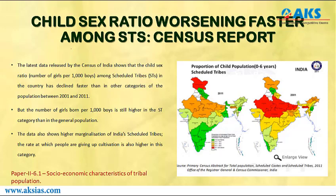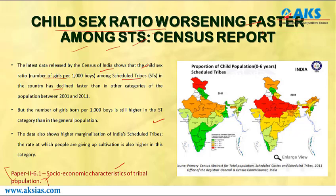The last news article covers child sex ratio worsening faster among STs, from the census report — a very unfortunate finding. This falls under Paper 2, Section 6.1, on socio-economic characteristics of tribal population. The latest data released by the Census of India shows that the child sex ratio — number of girls per thousand boys — among Scheduled Tribes has declined faster than other categories between 2001 and 2011.